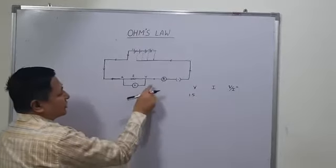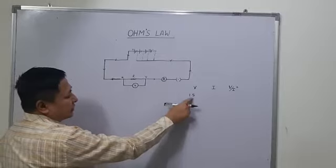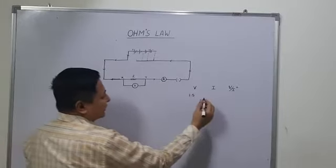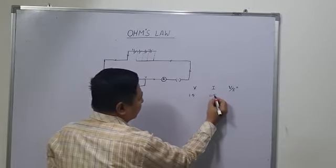Then we will measure the potential difference and current. The potential difference will be 1.5 volts and the current will be 0.5 amperes.